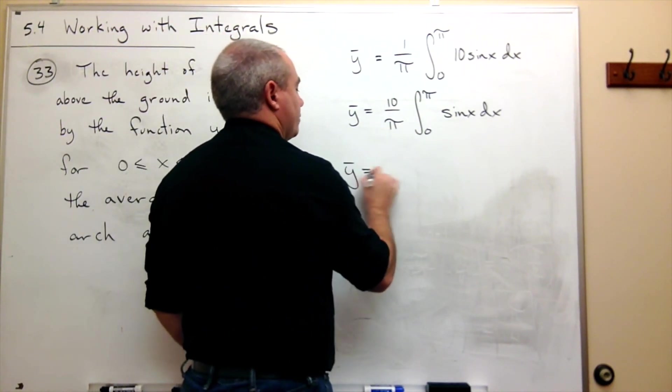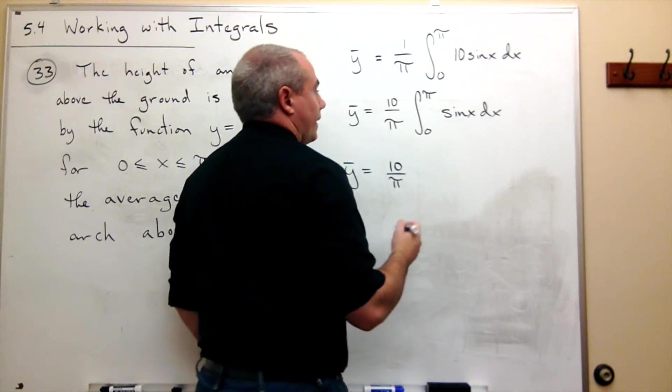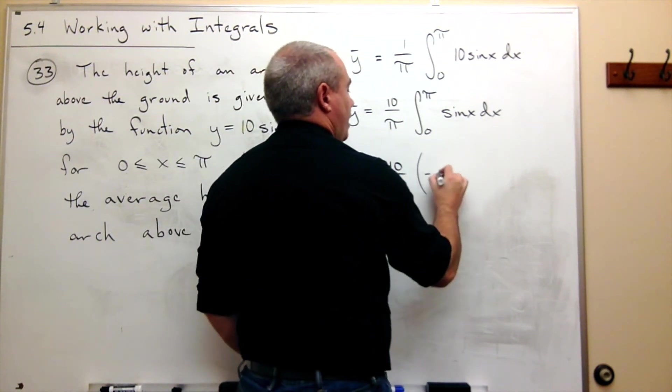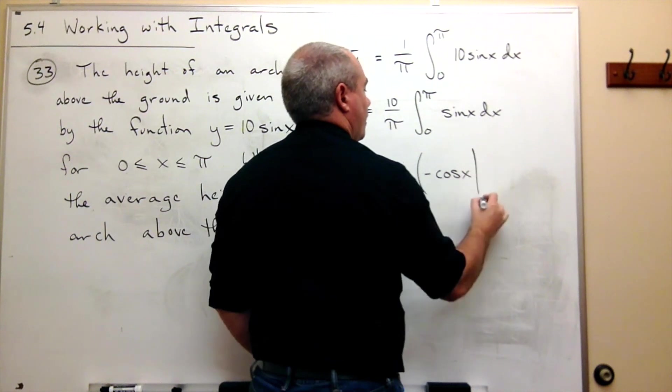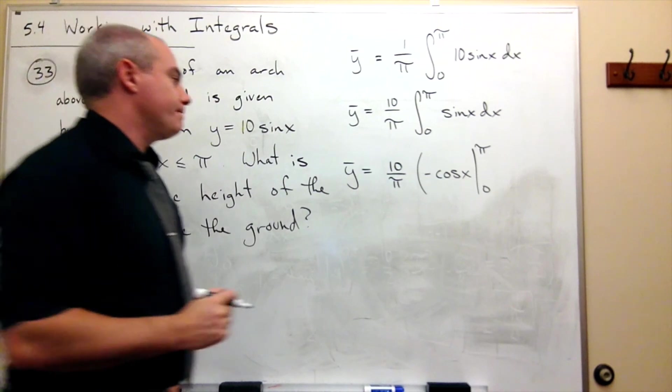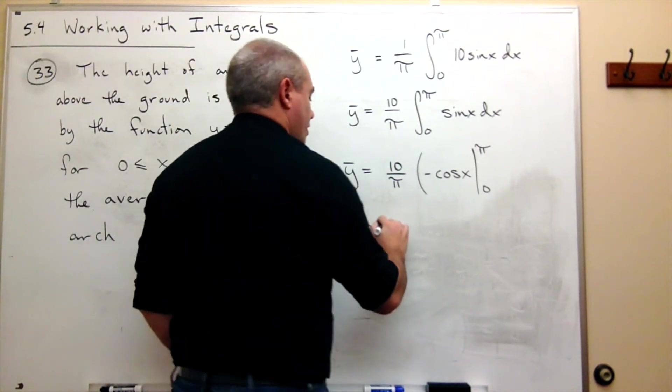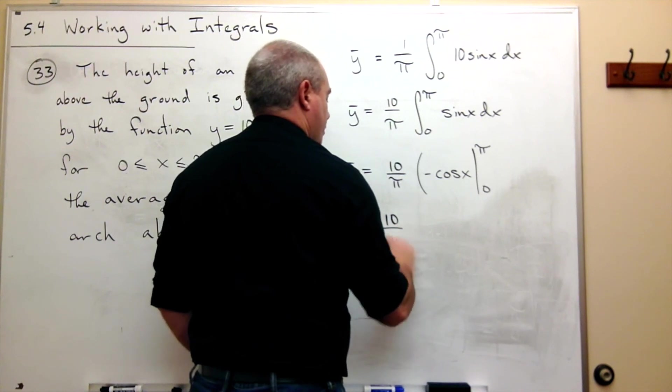So we get y bar equals 10 over pi times negative cosine x evaluated from 0 to pi. Then we get that y bar equals 10 over pi times—well if I plug in pi,